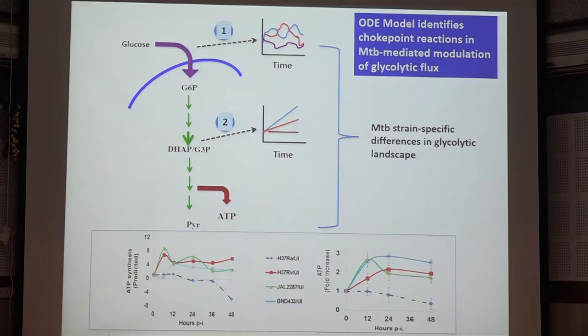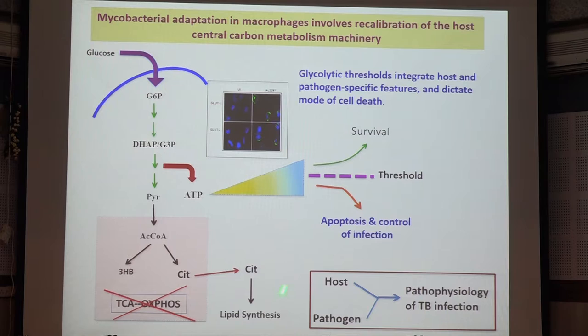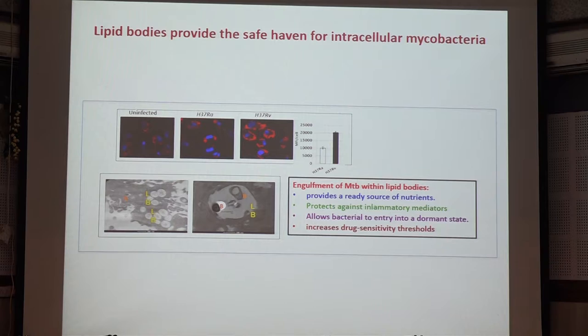The other thing the bug does is in the TCA cycle: citrate is a key intermediate where acetyl-CoA condenses with oxaloacetate. Mycobacteria ensure that citrate is pumped out into the cytoplasm. Once citrate is in the cytoplasm, it breaks down to give acetyl-CoA, which becomes a substrate for cholesterol and lipid synthesis. This is very critical for mycobacterial survival. The lipids that are made then accumulate as triglycerides, neutral fat, forming balls of lipids called lipid bodies.